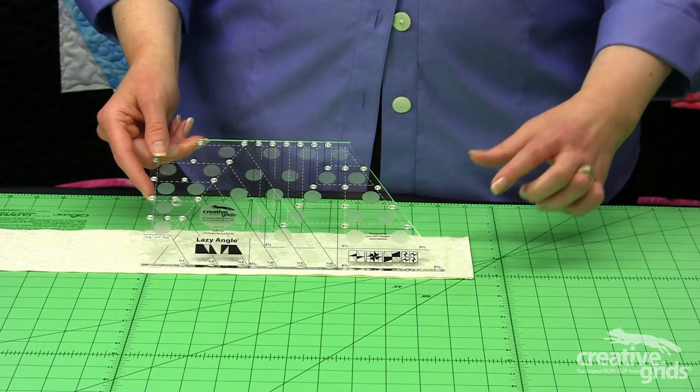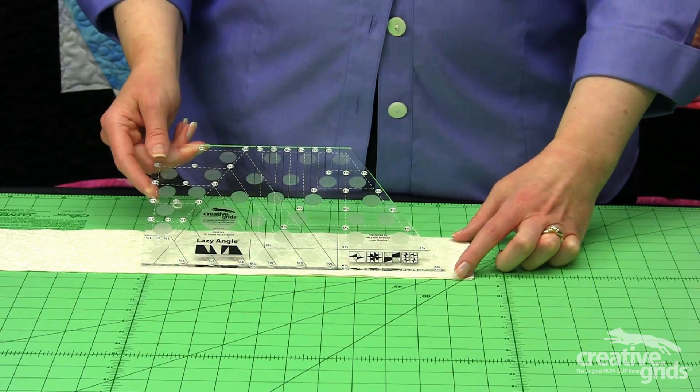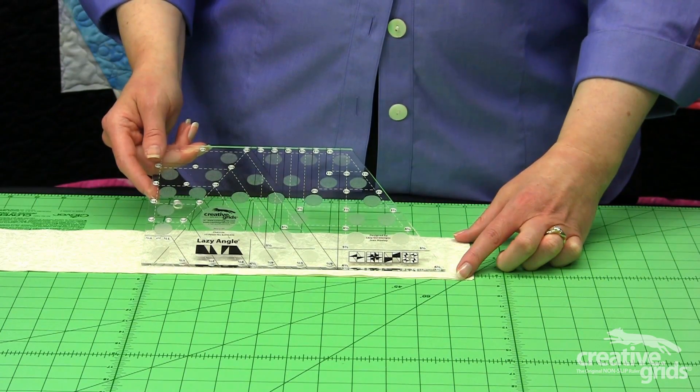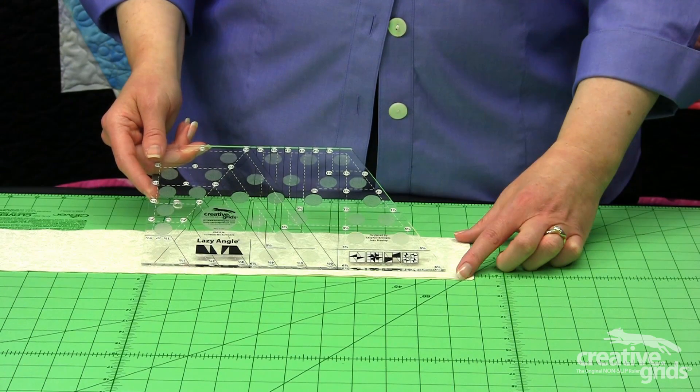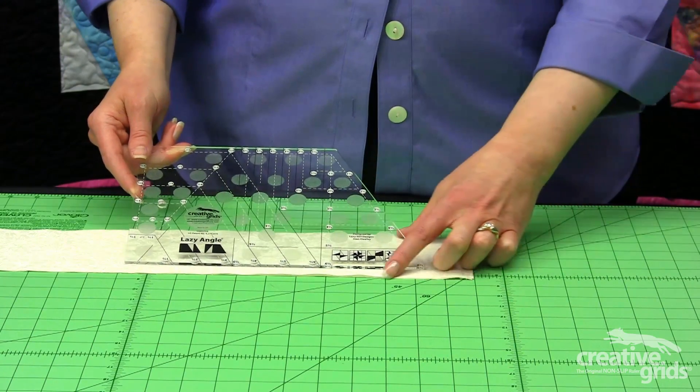Cutting using the Lazy Angle Ruler is very simple. Cut the size strip you need based on the size block you want. So for a 4 1/2 inch unfinished block, we'll cut a 4 1/2 inch strip.